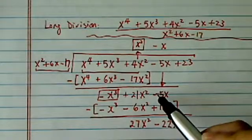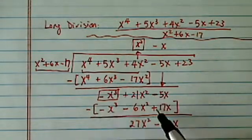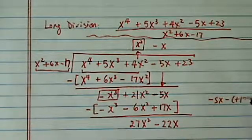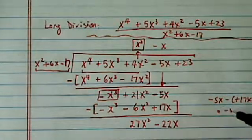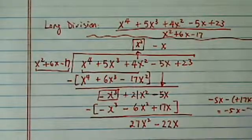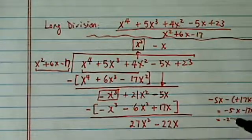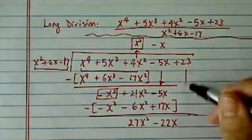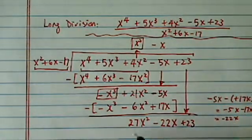And then it's minus 5 minus 17. That gives you minus 22x. So again, minus 5x minus a plus, which is really minus 5x minus a positive 17x. That's equal to minus 5x minus 17x. That's why I have a minus 22x. Almost there. Let's drop this down. Plus 23.